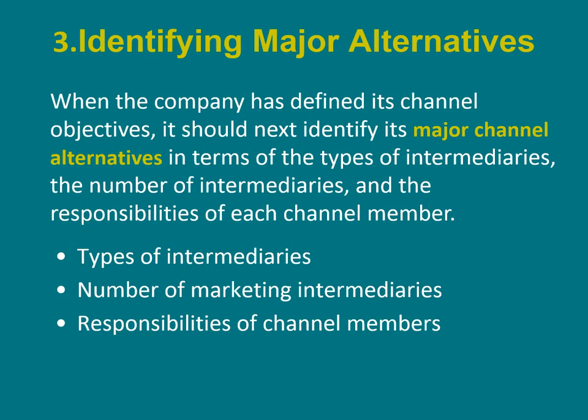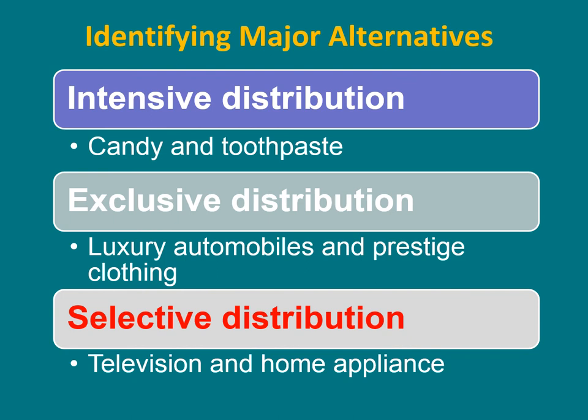The third step is to identify major alternatives. When a company has defined its channel objectives, it should identify its major channel alternatives in terms of types of intermediaries, number of marketing intermediaries, and the responsibilities of channel members. The alternatives are: intensive distribution for convenience products, selective distribution for shopping products, and exclusive distribution for specialty and prestigious products.